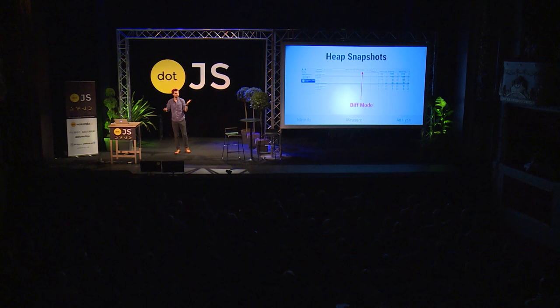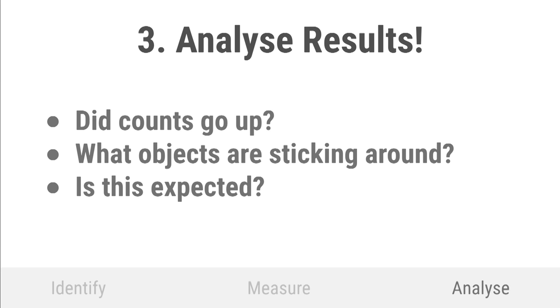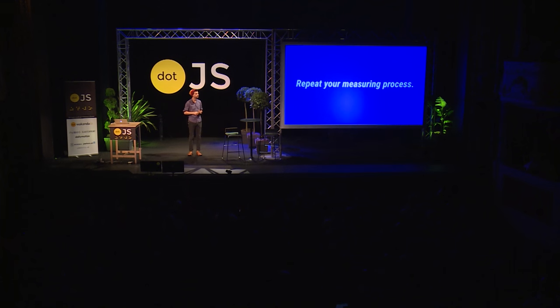Once I've spotted a potential issue, I go into heap snapshot mode and take snapshots before and after my action, then use the dropdown to diff between them. You expand some objects, see some red, click on an item to get the retained path and trace it back. Then look at the results: did the counts go up? What objects are sticking around? Like any good developer, comment out most of your code, rerun it — repeat your measuring process.